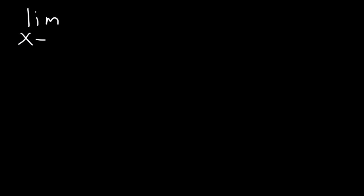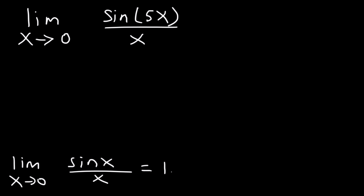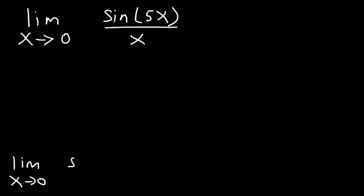Now let's work on this problem: what is the limit as x approaches 0 of sine 5x divided by x? Keep in mind we know that the limit as x approaches 0 of sine x divided by x is 1. For those who want a quick answer, it's 5x divided by 1x, which is 5. But you've got to show your work — that's just a quick way to get the answer.